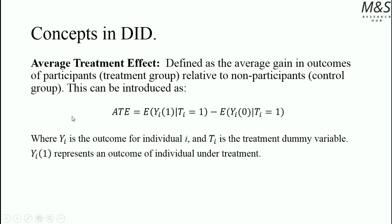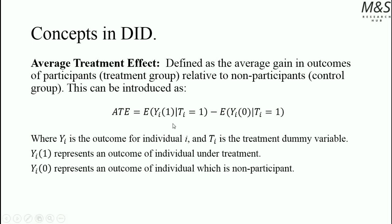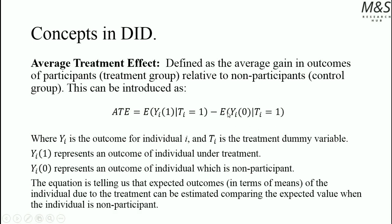From that, we subtract the expected outcome of the same individual who was non-treated when the treatment was given — this is the idea of the proper counterfactual. However, in reality, we cannot measure this. The equation tells us that the expected outcomes in terms of means of the individual due to a treatment can be estimated by comparing the expected value when the individual is non-participant. Since this proper counterfactual is hard to find in reality, we need to make assumptions in order to estimate the average treatment effect.